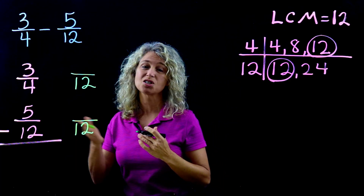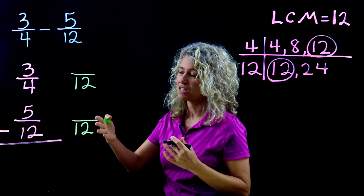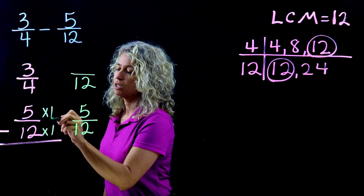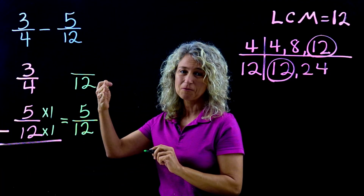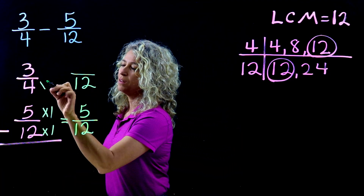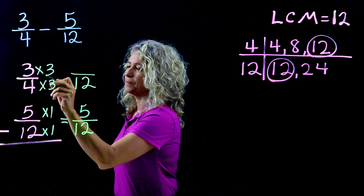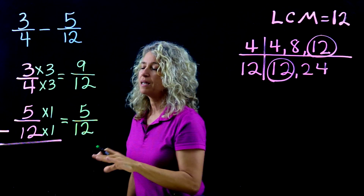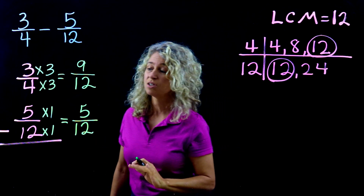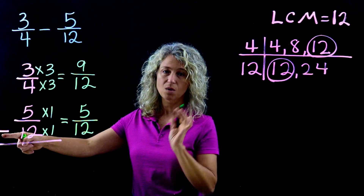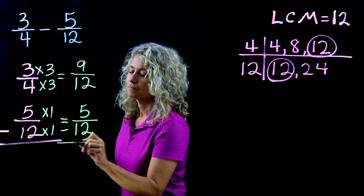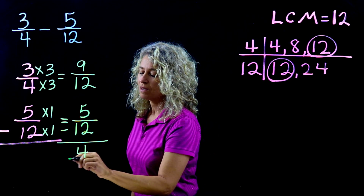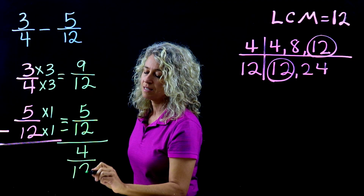For 5/12, how do you get from a 12 to a 12? It's just times 1 — so copy it right over: 5/12 stays as 5/12. For 3/4, how do you get from a 4 to a 12? That's times 3 — so 3 times 3 is 9. We've made equivalent fractions and we're ready to solve. Always watch your sign — subtract: 9 minus 5 is 4, and the denominator stays the same.